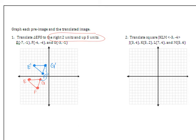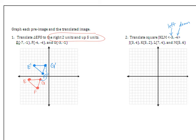On number two, it says translate square J-K-L-M, and it has these pointy brackets with negative three, negative four. That's another way of writing how much to translate an object. This means you're going to go left three and down four. Please pause the video and try number two — plot the pre-image and then translate it left three, down four.